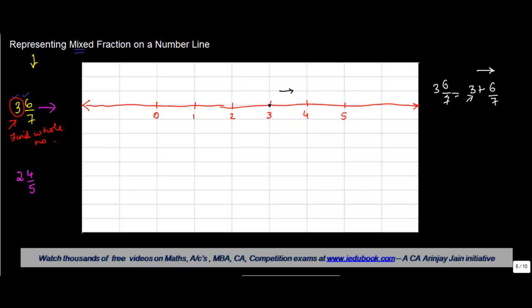In such cases, once you have located the whole number on the number line, you see what is the denominator. In this case the denominator is 7, so what you do is between the two whole numbers, the one that is given and the next whole number, divide this area into as many equal parts as is the denominator.